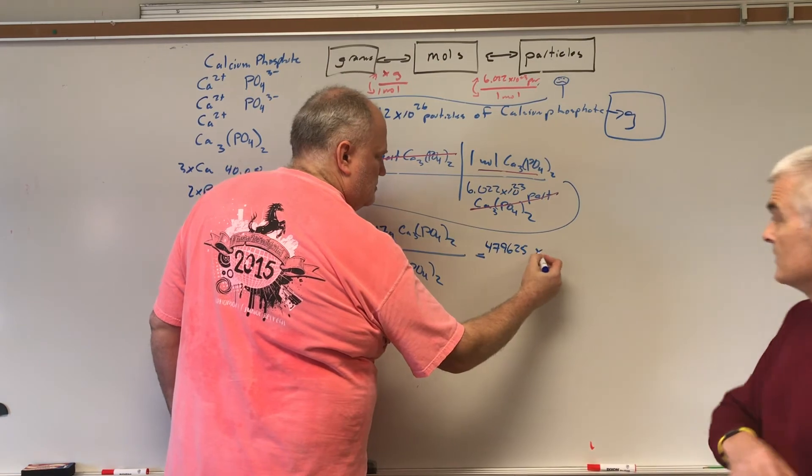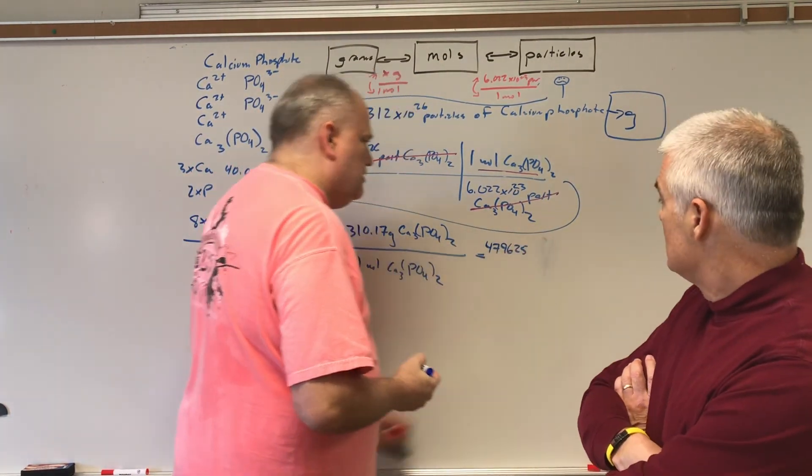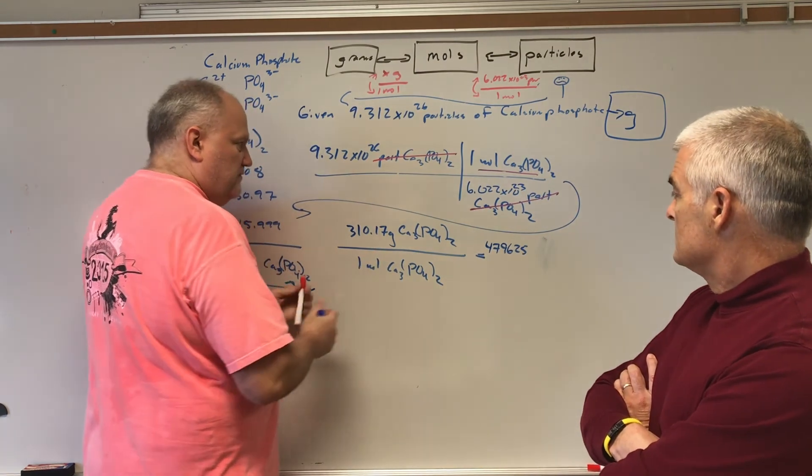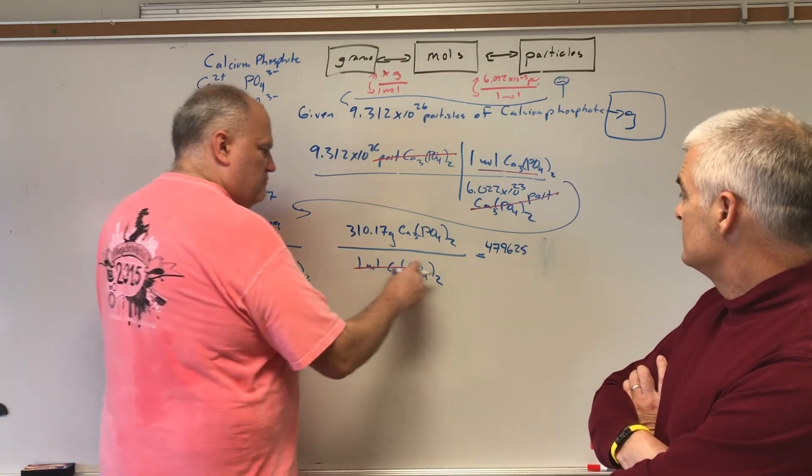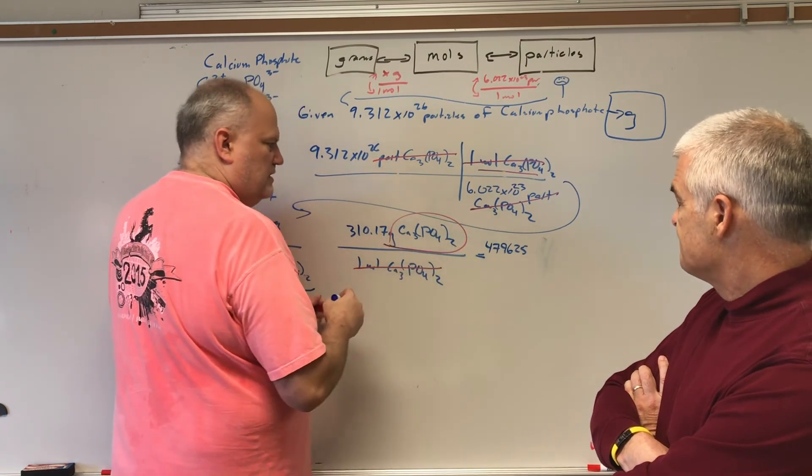And that would be what units? There's no times 10. The units are going to be the only thing that's left standing here because I did not cancel with a vengeance. Moles cancels here, moles cancels here. So we've got just grams of calcium phosphate. That's the only thing that's left.